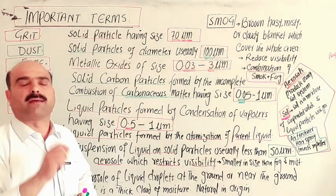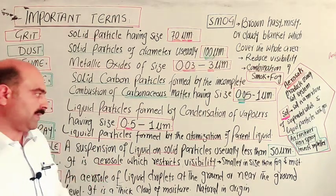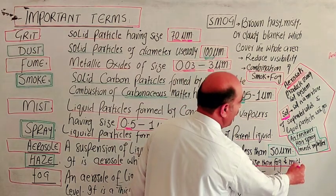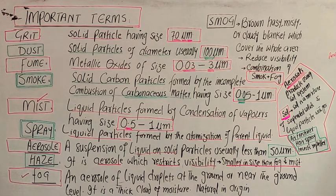You cannot see clearly, things look blurry. This is haze. And it is smaller in size than fog and mist. The particle size is smaller than mist or fog.